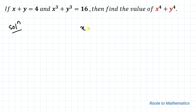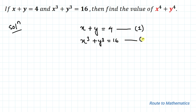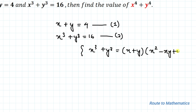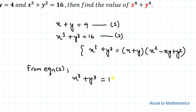We have given x plus y equals 4 — let's take it as equation 1. And our second equation is x cubed plus y cubed equals 16, which is equation 2.